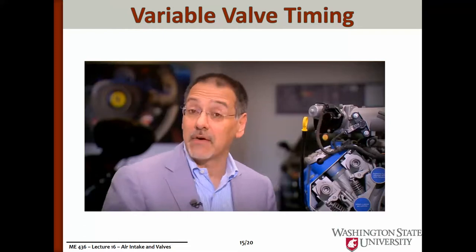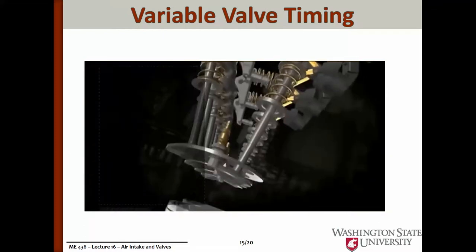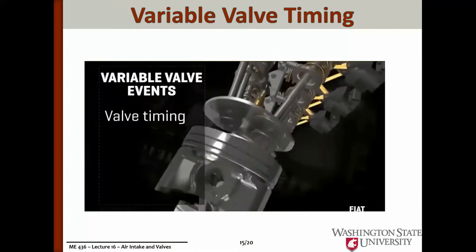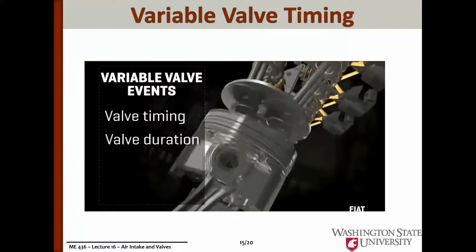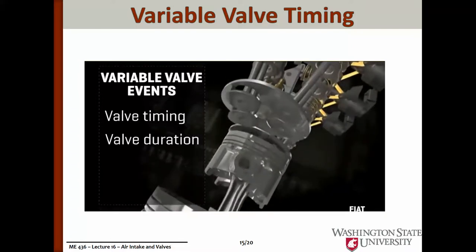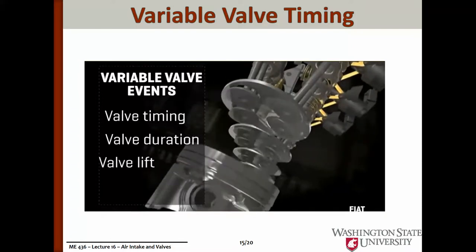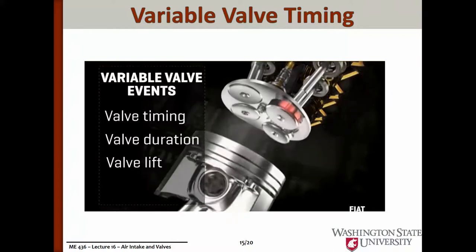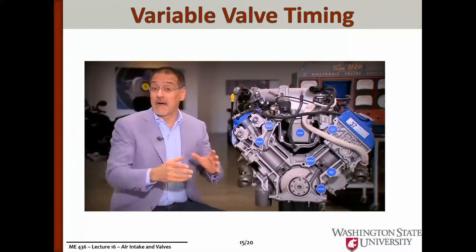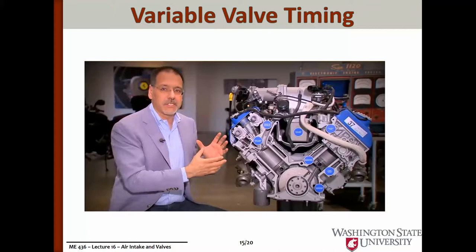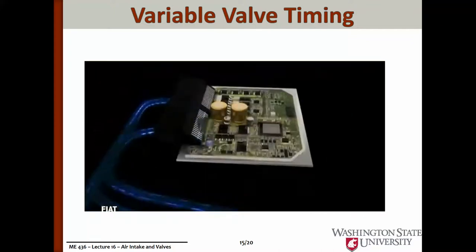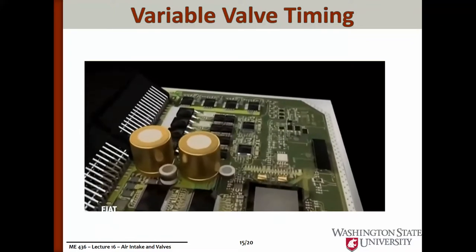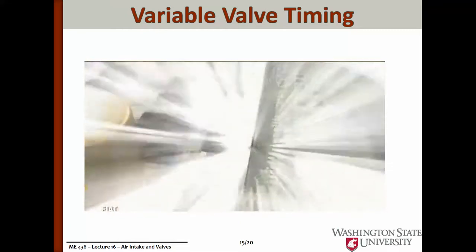Variable valve timing changes three parameters: valve timing (at what points in the engine's rotation do the valves open and close), valve duration (how long the valve stays open), and valve lift (how far a valve moves off its seat when it opens). Varying all those valve events allows the engine's electronic control unit to constantly optimize for the most power, the best MPG, and the lowest emissions all at once.